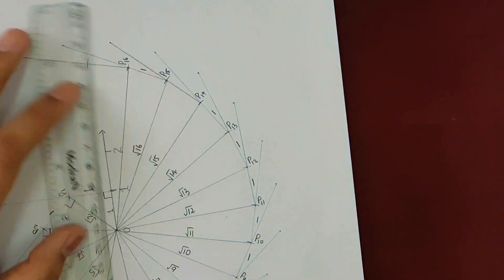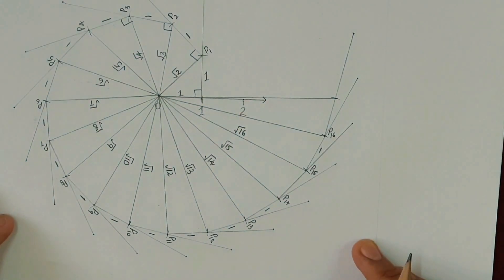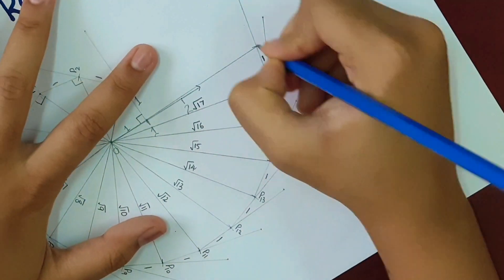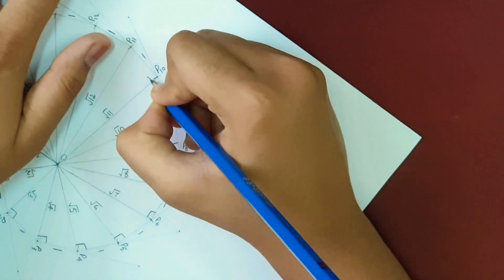Yes, so we have reached the point where we have started. We can continue this way if we have a very big paper. And this is our square root spiral.